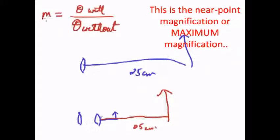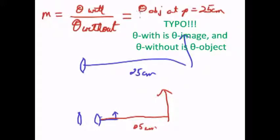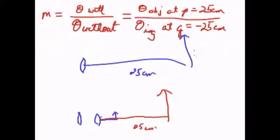So magnification is the angular size with the magnifying glass divided by the angular size without the magnifying glass, and so that's the angular size of the object at p equals 25 centimeters without the magnifying glass at all versus the angular size of the image at q equals negative 25 centimeters which is the angular size of the virtual image that you see through the looking glass.